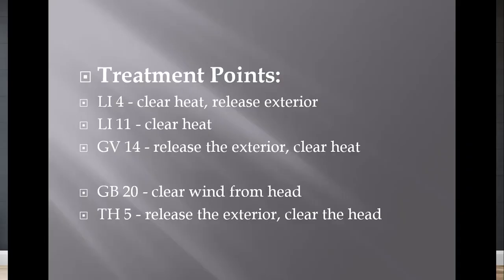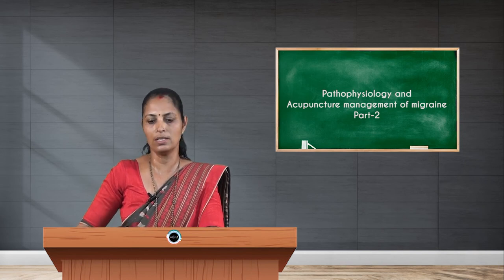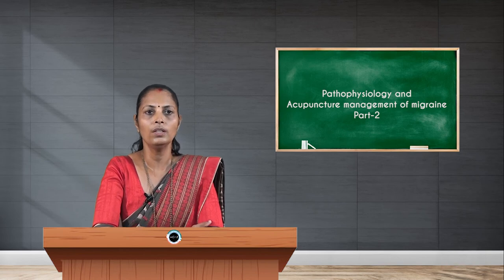Treatment points for wind heat: LI 4 helps to clear heat and release the exterior. LI 11 also clears heat and is a potent homeostatic, immune-enhancing, and tonification point. GV 14 releases the exterior, clears all heat, and is a potent immune-enhancing point. GB 20 clears wind from the head region. TH 5 — Triple Warmer 5, located 2 cun proximal to the midpoint of the dorsal wrist crease — helps to release the exterior and clear heat.